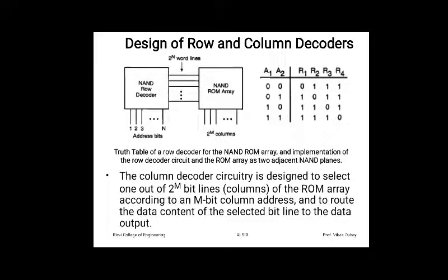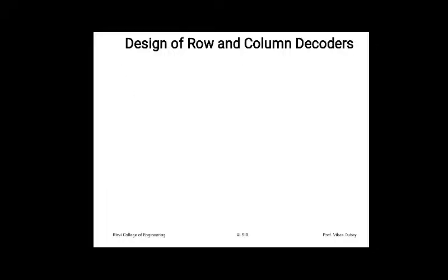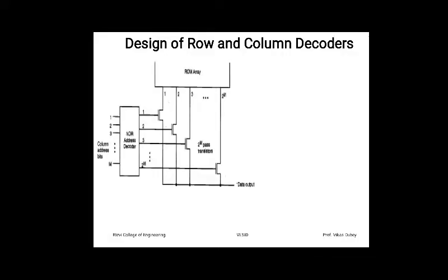The column decoder circuitry is designed to select one out of 2^M bit lines, while rows have 2^N lines. There are M column address bits for 2^M lines. A straightforward implementation uses a NOR address decoder with M inputs and 2^M outputs. Each output drives an NMOS pass transistor connected to each bit line, routing the selected column to the data output.